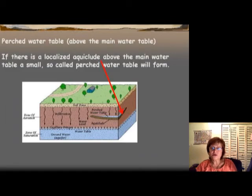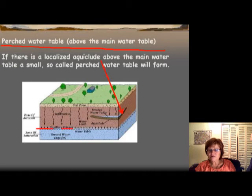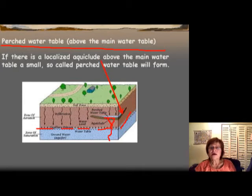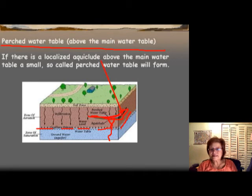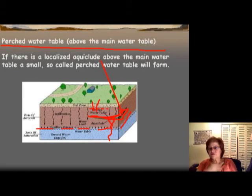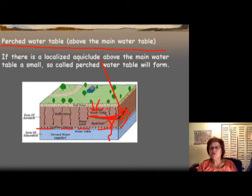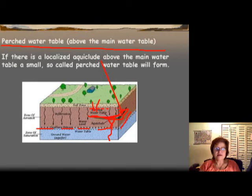The next thing to talk about is the perched water table. A perched water table exists above the main water table. We show the main water table with dotted lines and a small triangle symbol. If you have a clay lens — and clay is an aquiclude, so it doesn't let water through — it will create a temporary local water table above it. If you are in an area with a perched water table, your well could be very shallow, which is not ideal because shallow wells don't provide enough filtration to remove bacteria and animal waste contaminants.